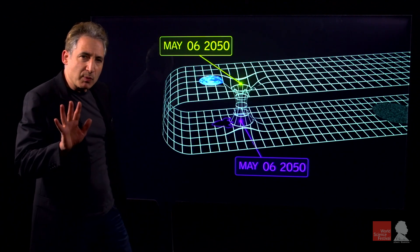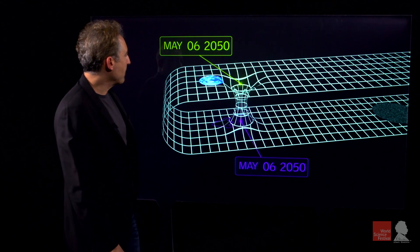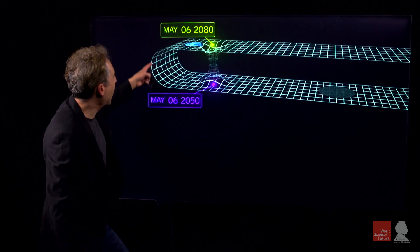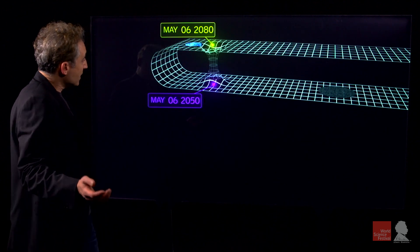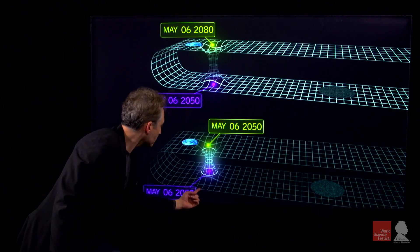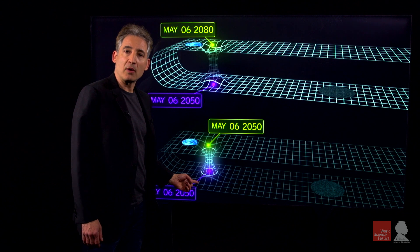So what we've done is we've looked at one and the same situation from two different perspectives. The first perspective was looking at how time hooks up outside of the wormhole, where we found a 30-year time difference. And the second perspective looked at how time hooks up through the wormhole, where we found no time difference at all.